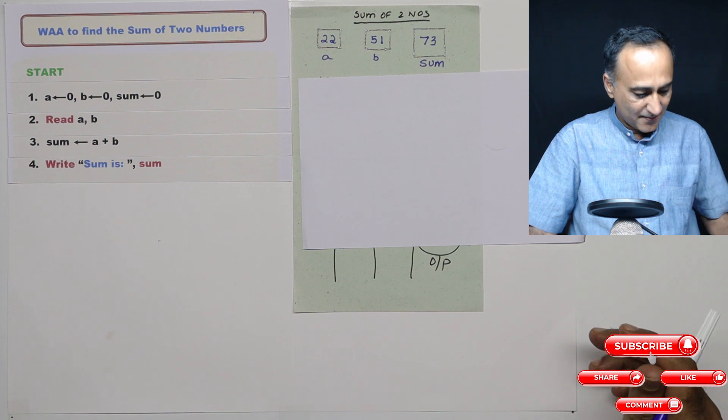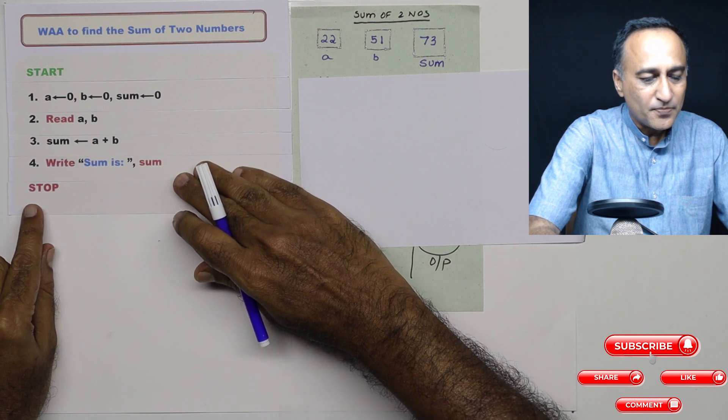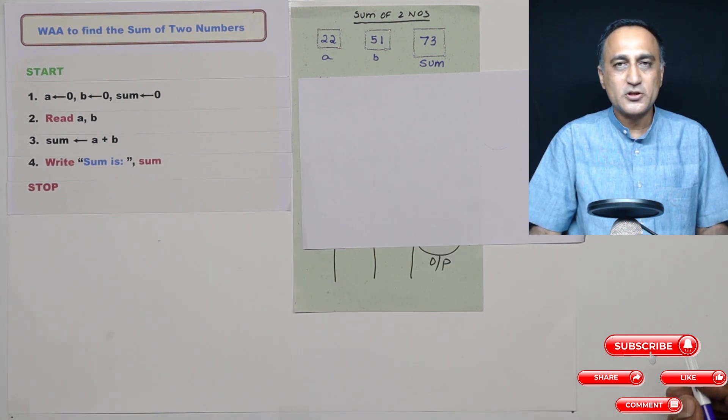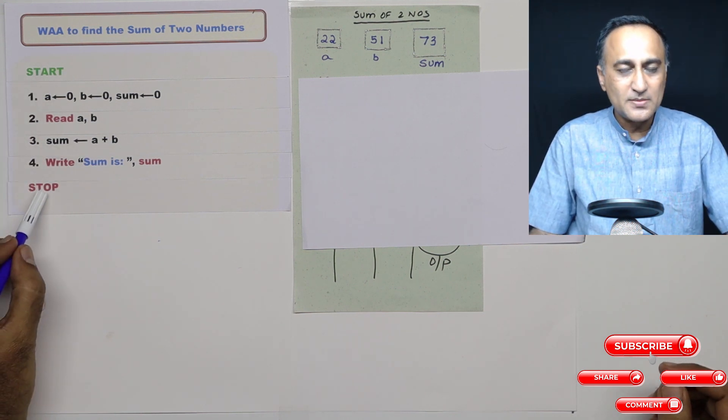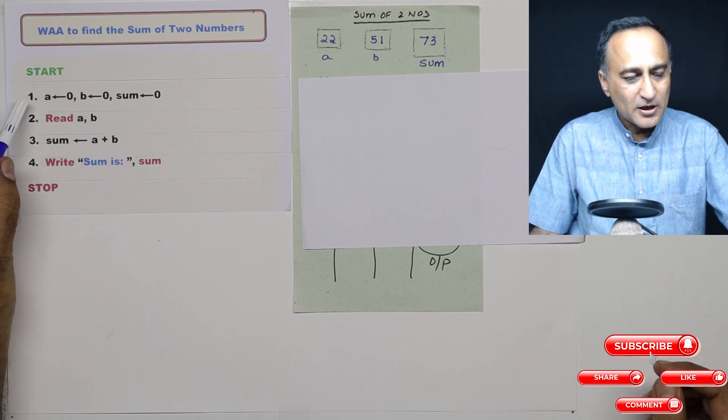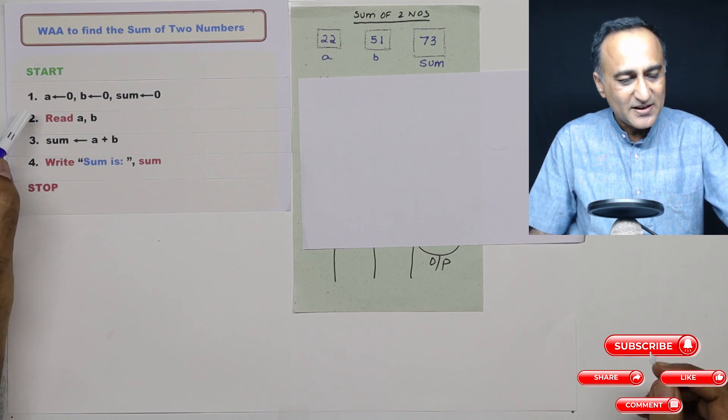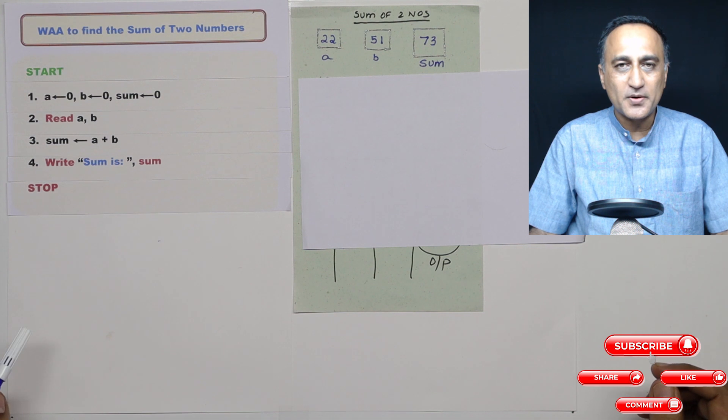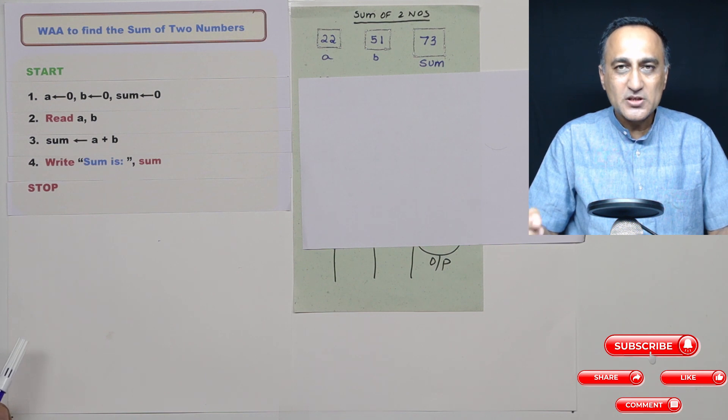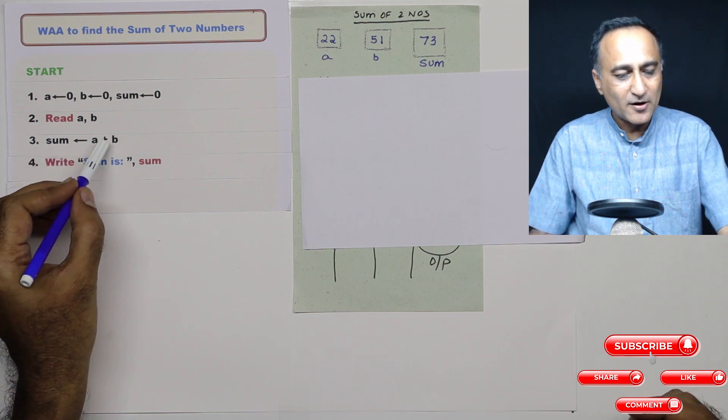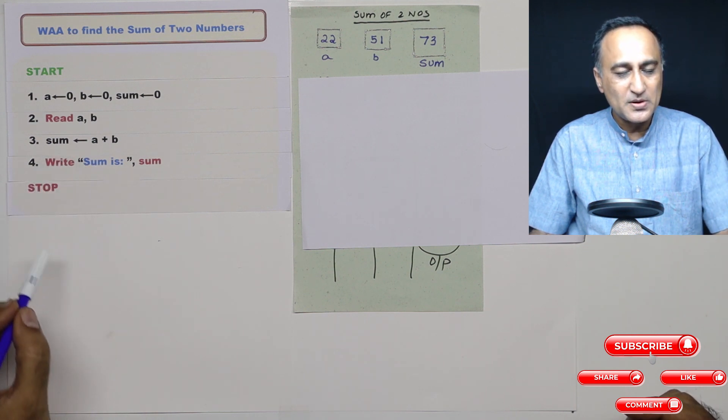Once I calculate the sum, all that I need to do is, I need to display the value of sum on the screen. So I am saying, write sum is sum. So I'll explain what is this line. And finally, I will have to indicate it with a stop. So a few things I need to describe about this algorithmic approach to find the sum of two numbers. Beginning of an algorithm start, end of an algorithm stop. Each step of an algorithm is given one number. Next thing is, if you see there is a definite sequence in which I have done these operations.